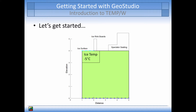Prior to placing the ice, the ground temperatures are steady at three degrees Celsius at the surface and 3.1 degrees Celsius at a depth of four meters. The material model used for the simulation will be the full thermal model to incorporate the unfrozen water content curve, but constant frozen and unfrozen thermal conductivities and heat capacities will be used.